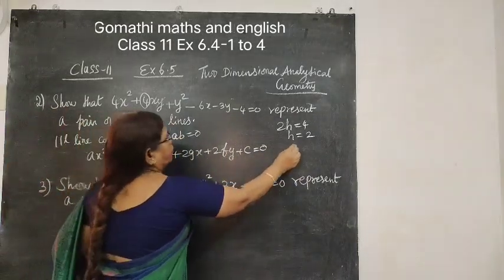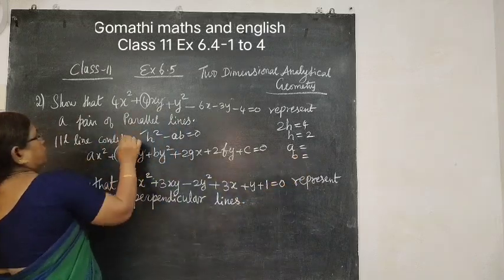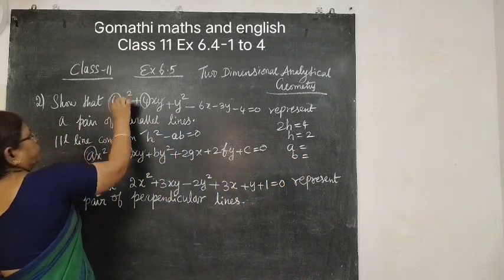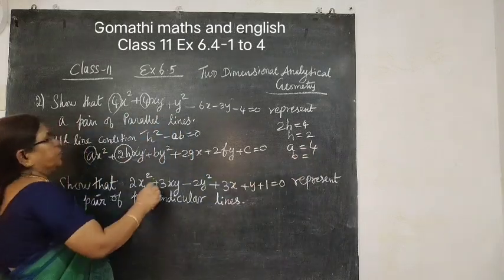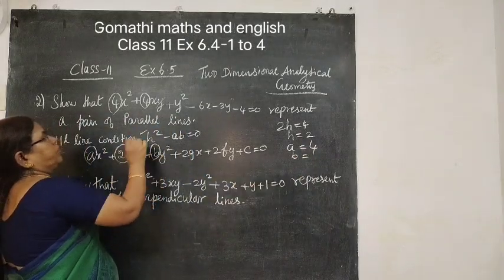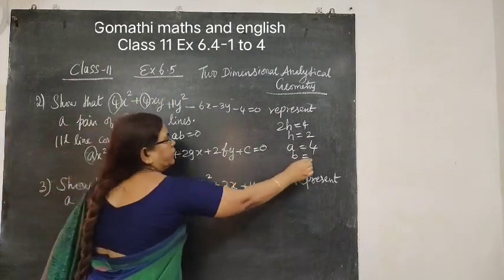A and B. What is A? This is A, the coefficient of x squared. A value is 4. Then what is B? B is Y squared coefficient. Here Y squared is 1, so B equal to 1.